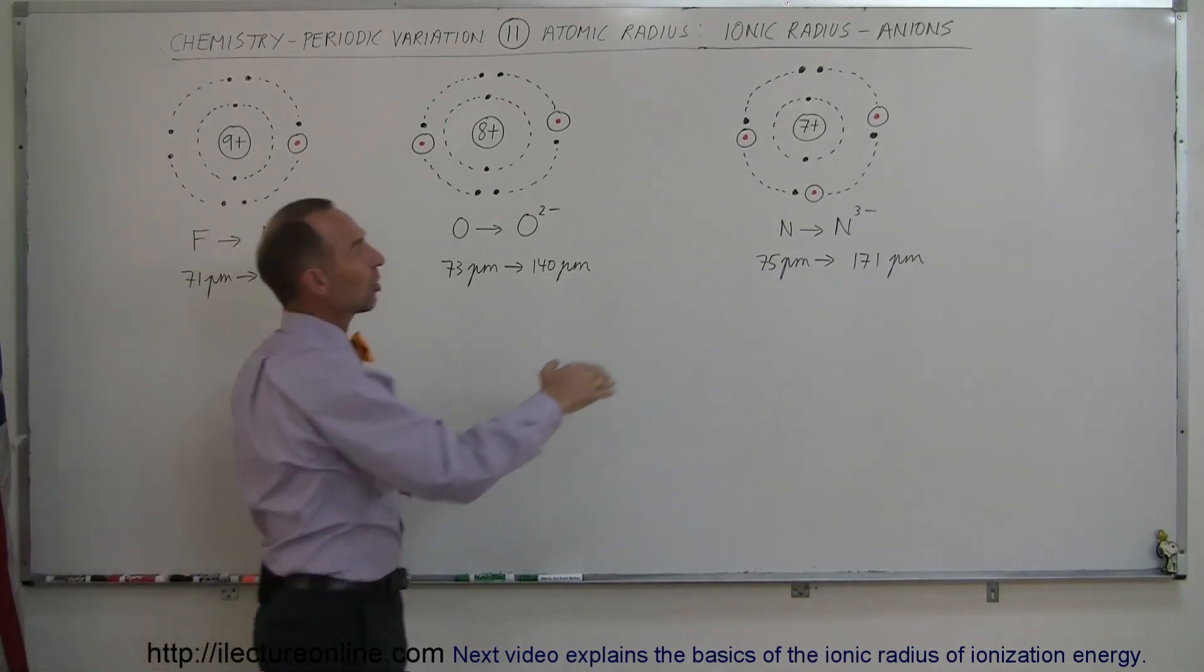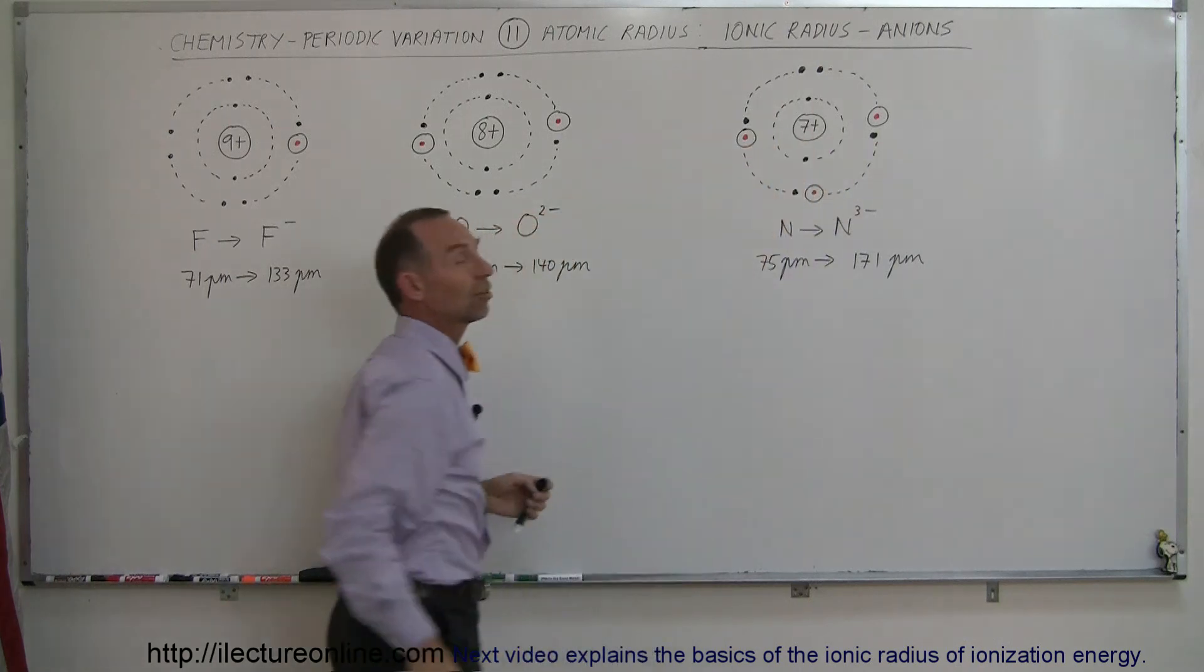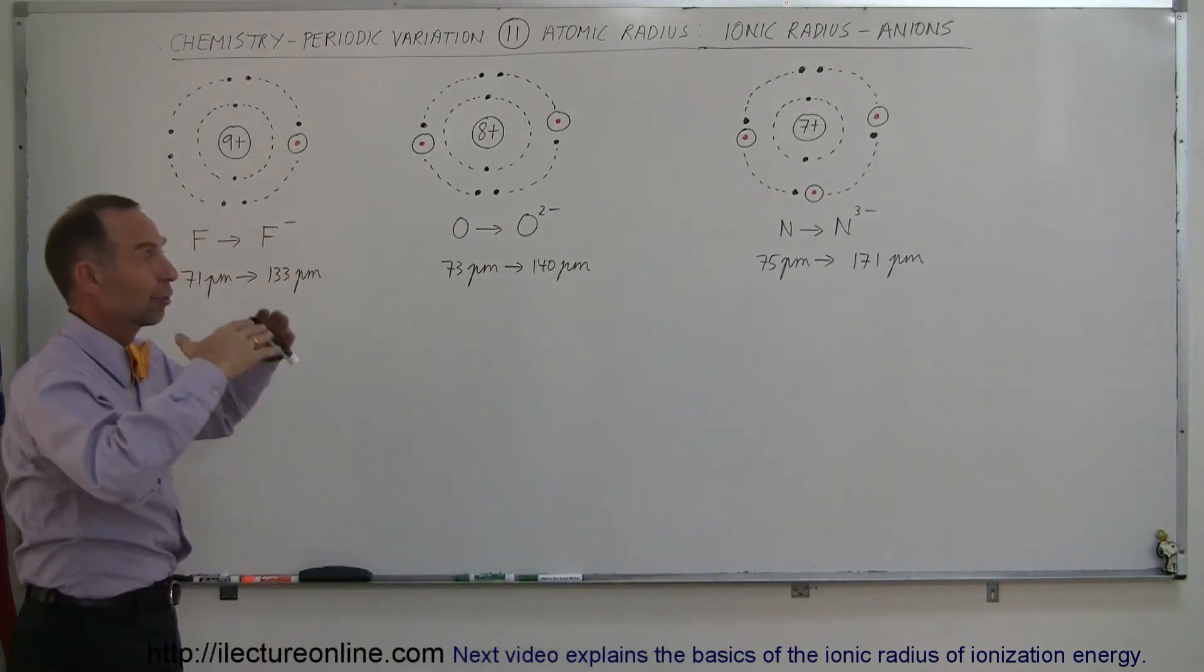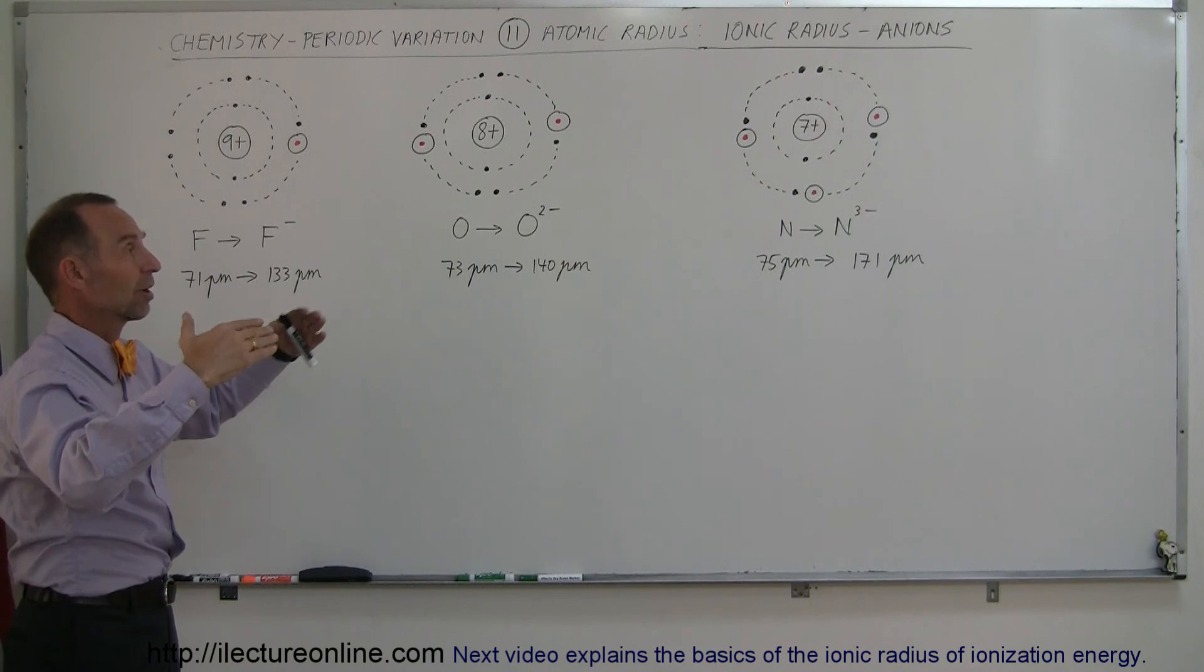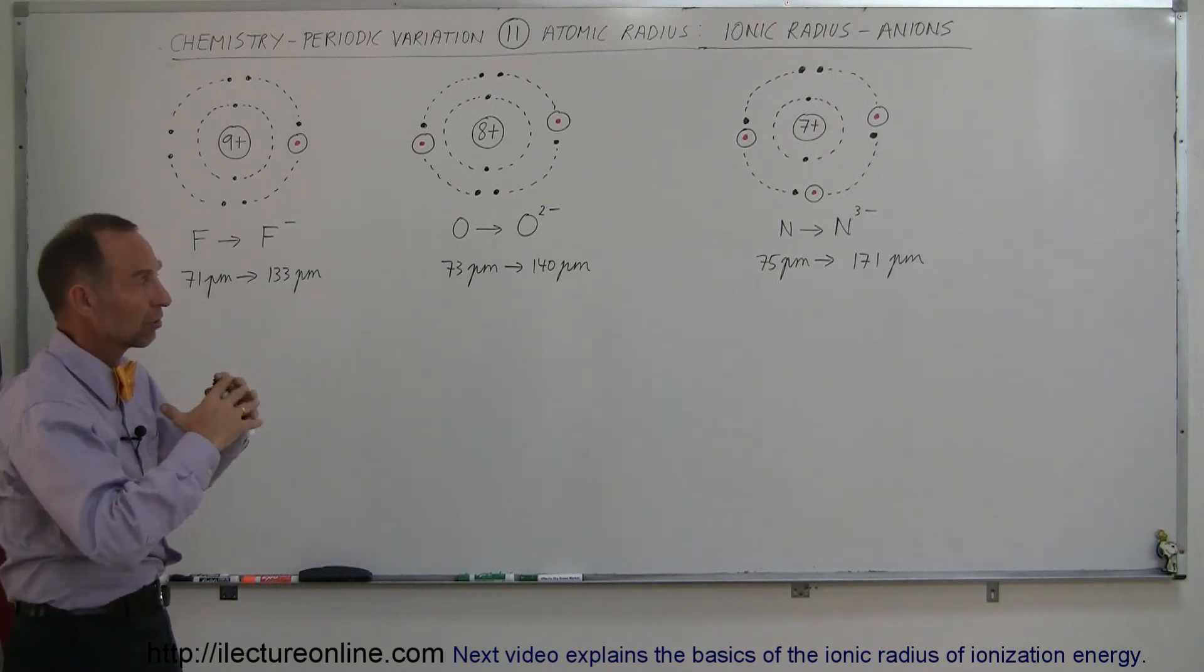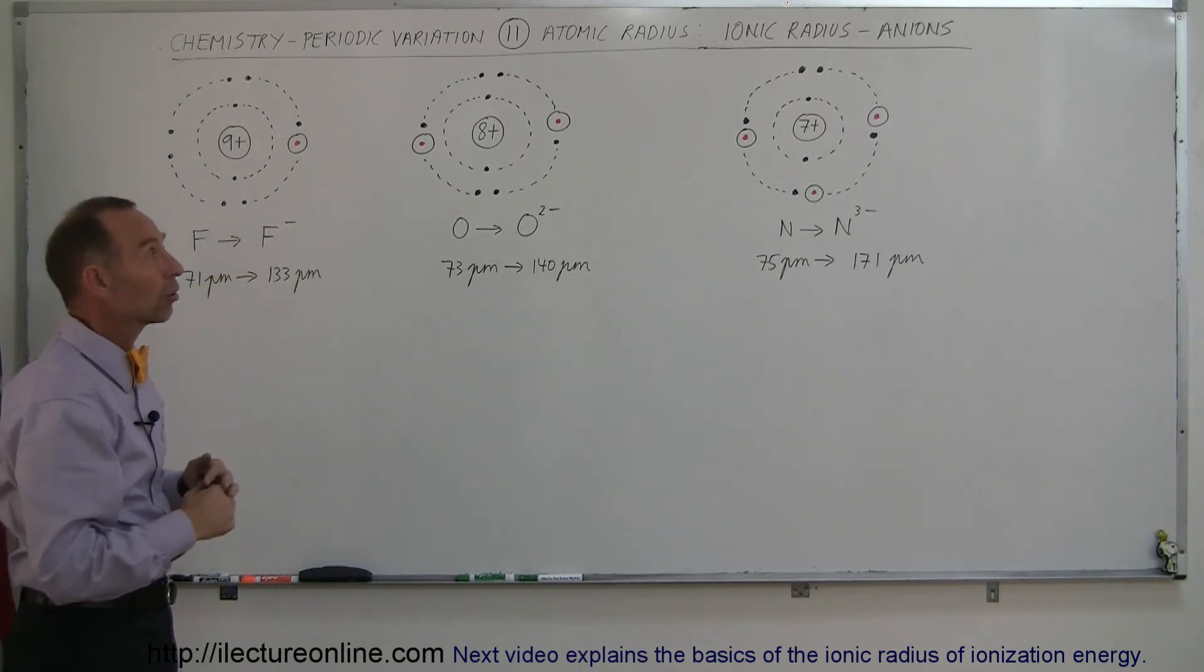The number of positive charges in the nucleus decreases, the number of negative charges in the second energy level is the same. Therefore with less positive charge to pull in the electrons, and with all the repulsive forces between the eight electrons, it swells it up to a very large size.